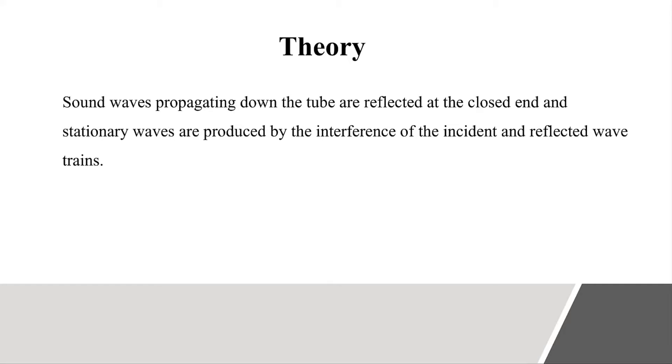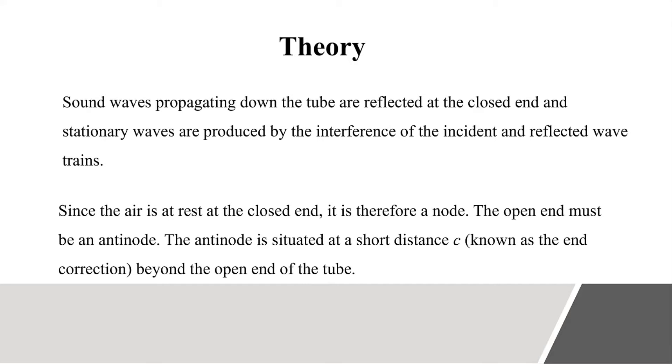Sound waves propagating down the tube are reflected at the closed end and stationary waves are produced by the interference of the incident and reflected wave trains. Since the air is at rest at the closed end, it is therefore a node.